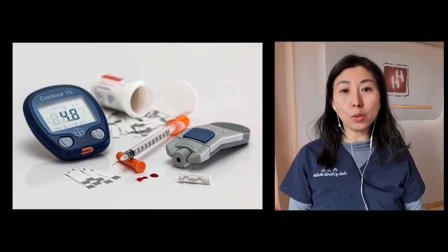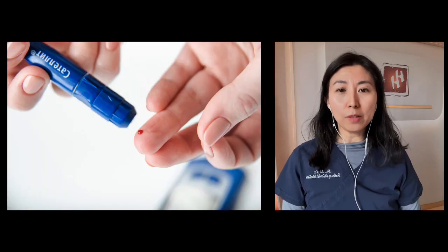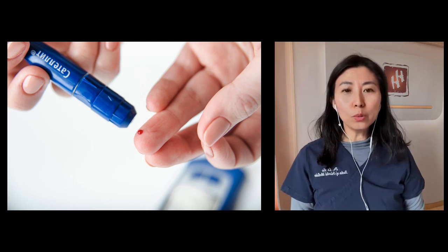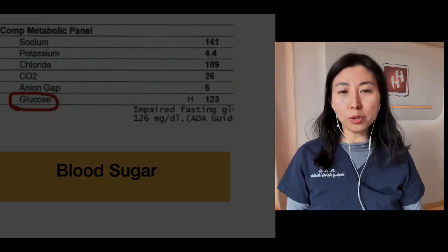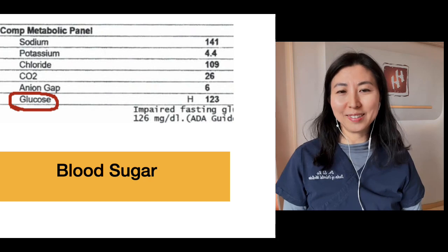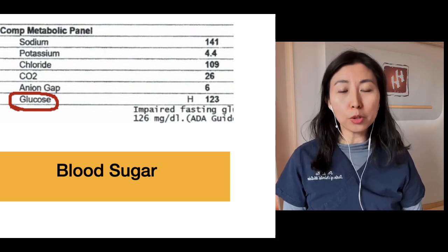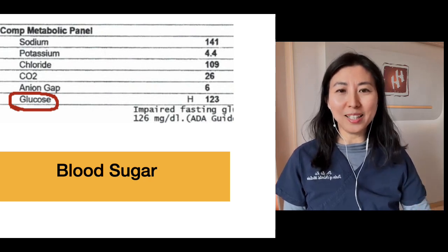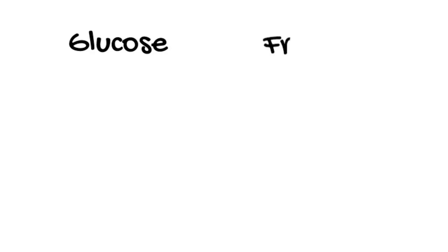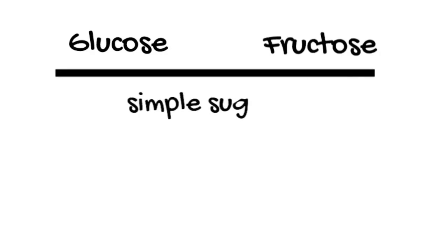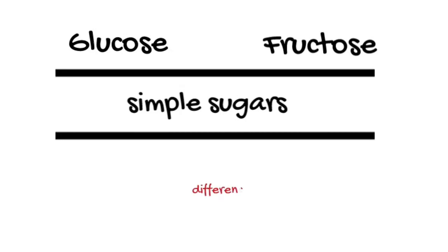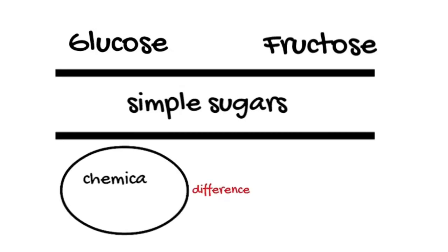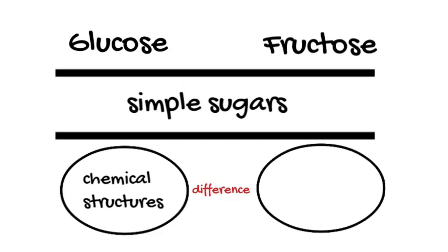If your glucose level is elevated outside the normal range, your doctor may order further testing such as hemoglobin A1c to check for pre-diabetes. Glucose is often referred to as blood sugar, but we don't refer to fructose as blood sugar — let me explain why. Fructose and glucose are both simple sugars, also known as monosaccharides, which are found naturally in fruits and vegetables, but they have different chemical structures and characteristics.